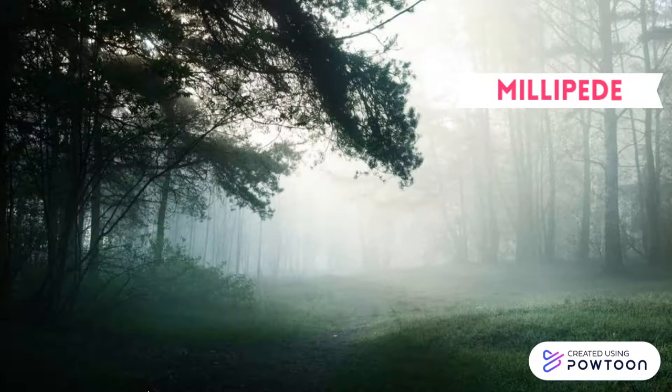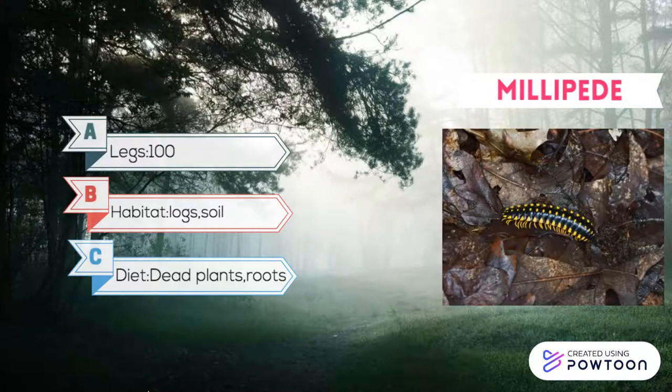Millipede. Millipedes have more legs than centipedes. They curl up into a coil shape and spray acidic toxin if threatened.